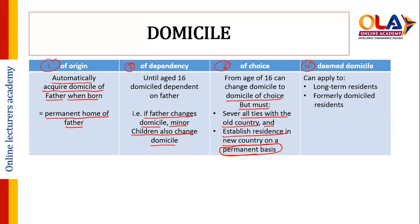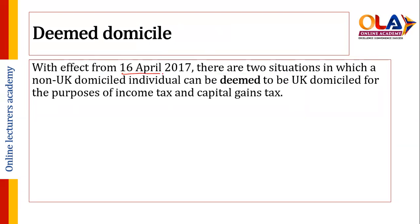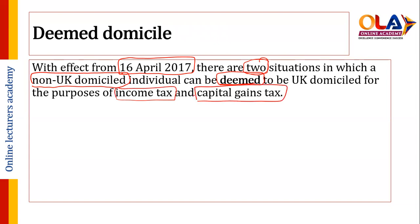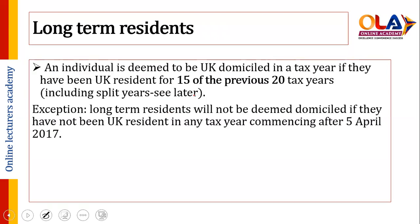The fourth type is deemed domicile. If a person is not domiciled by origin, dependency, or choice, and is not a UK resident, they may apply for long-term deemed domicile. With effect from 6th April 2017, there are two situations in which a non-UK domicile individual can be deemed domicile for income tax and capital gains tax purposes.